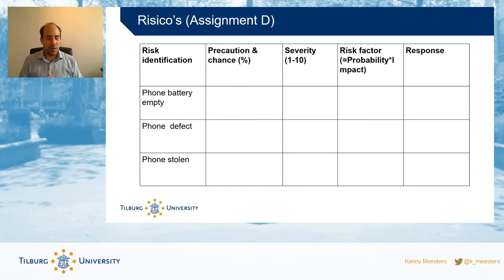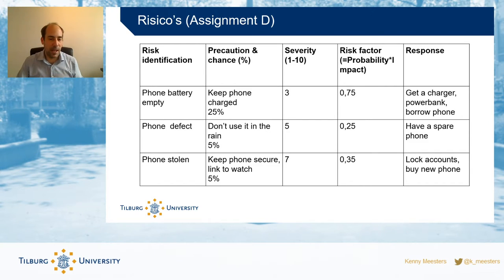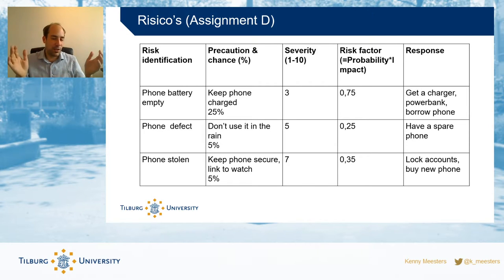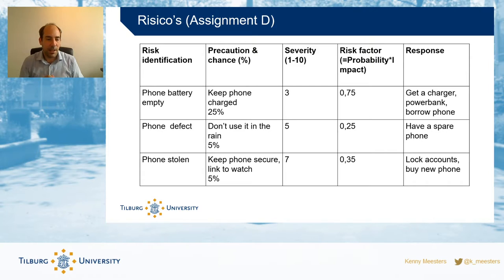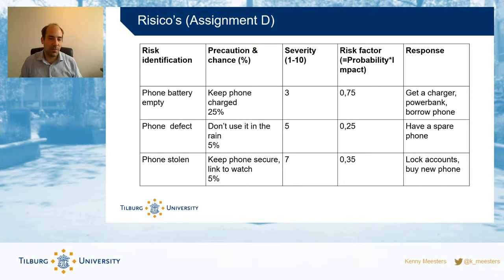You could take this table — it will be in an assignment for students — and start filling it in with precautions and the chance that each event happens. To make sure my phone doesn't die, I could keep it charged. Let's say there's a 25% chance I'll run out of battery before end of day with an old phone. My phone getting broken doesn't happen often, but I do go for a run and it might rain — let's say a 5% chance. The countermeasure: don't use it when it's raining. My phone being stolen — I can keep it in my pocket and it's linked to my smartwatch, so if they get too far apart I get a notification. Let's say a 5% chance of being stolen.